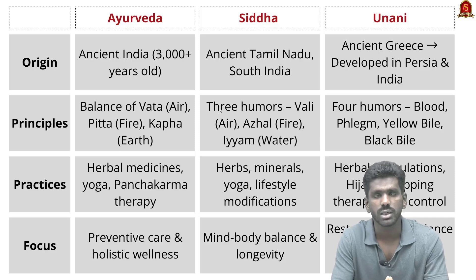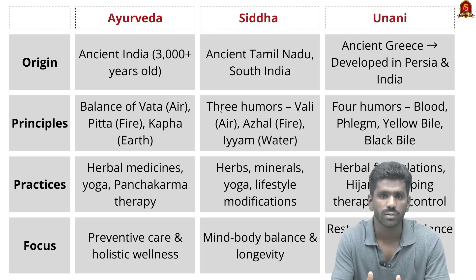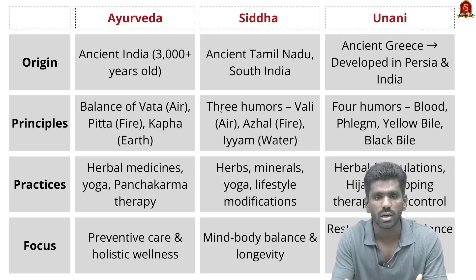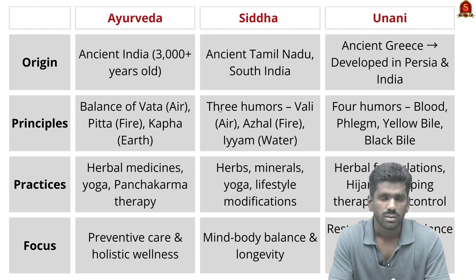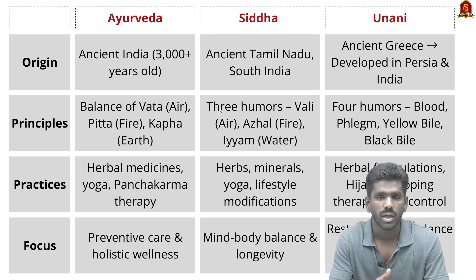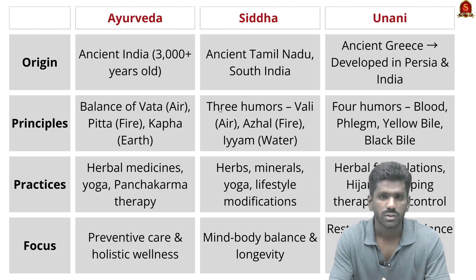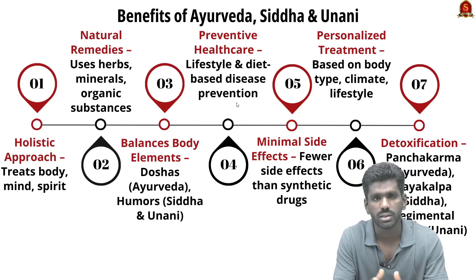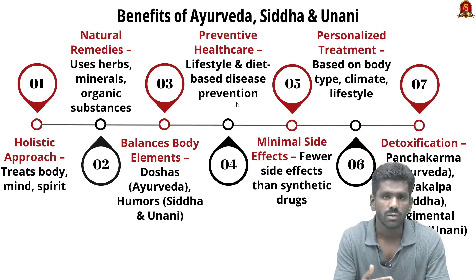Unani medicine originated in ancient Greece but was further developed in Persia and India. It is based on the theory of four humors: blood, phlegm, yellow bile, and black bile. The body's health depends on balancing these four humors. Unani treatments include herbal formulations, diet control, and therapies such as Hijama. Like Ayurveda and Siddha, Unani emphasizes restoring balance using natural substances to encourage self-healing.